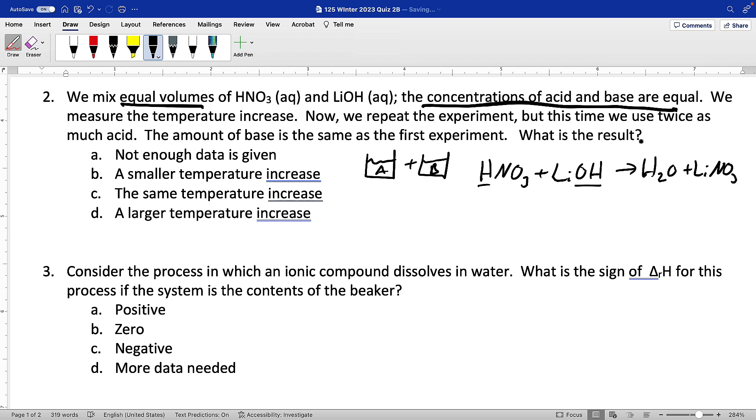But in the second experiment, we use twice as much acid but keep the base the same. Now we've got a lot more acid, same amount of base. So now the base is going to be the limiting reactant. The heat that we produce is going to be based on the base since that's the limiting reactant. We didn't make any more heat than in the first experiment, but the mass of water went up.